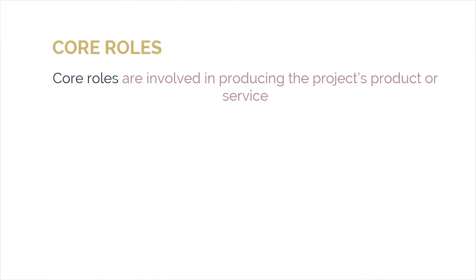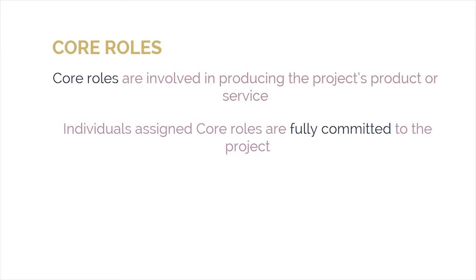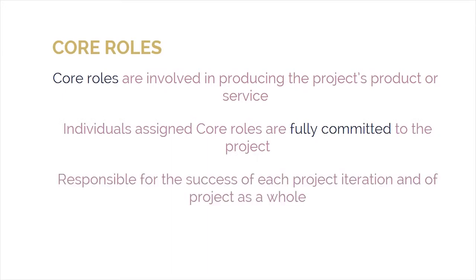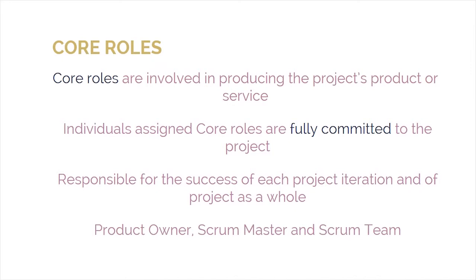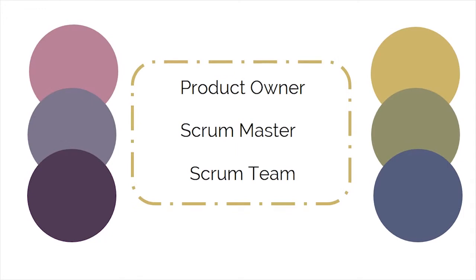Core roles are those that are involved in producing the project's product or service. Individuals assigned core roles are fully committed to the project and are ultimately responsible for the success of each project iteration and of the project as a whole. Core roles are assigned to the product owner, Scrum master, and the Scrum team. Let's meet them one by one and see what they do in a Scrum-controlled project.